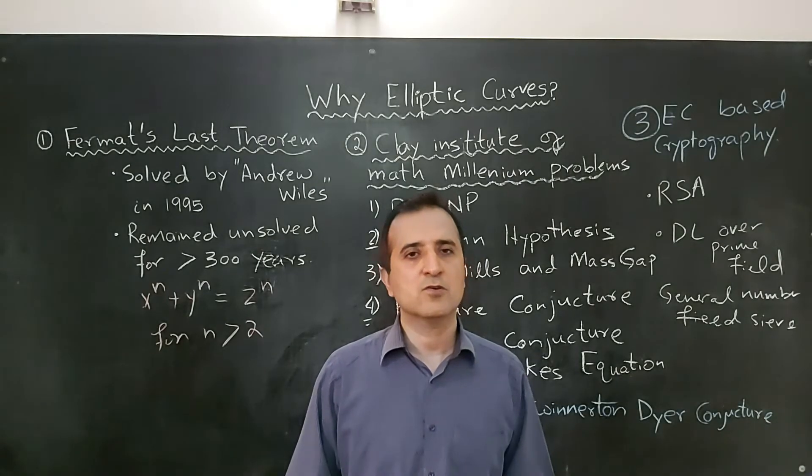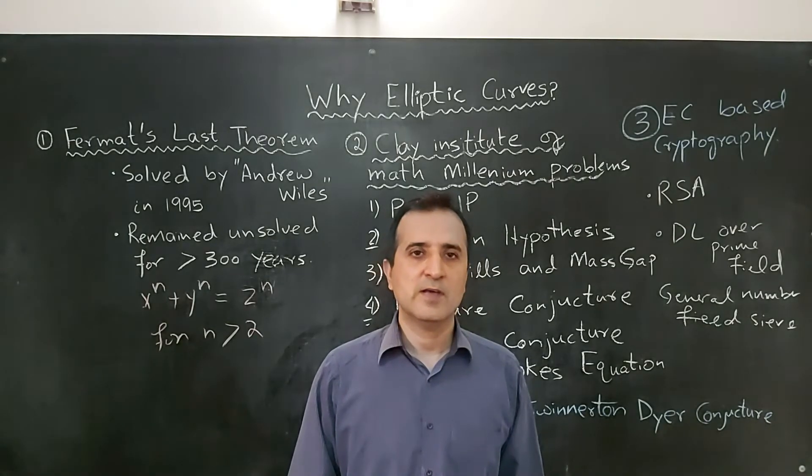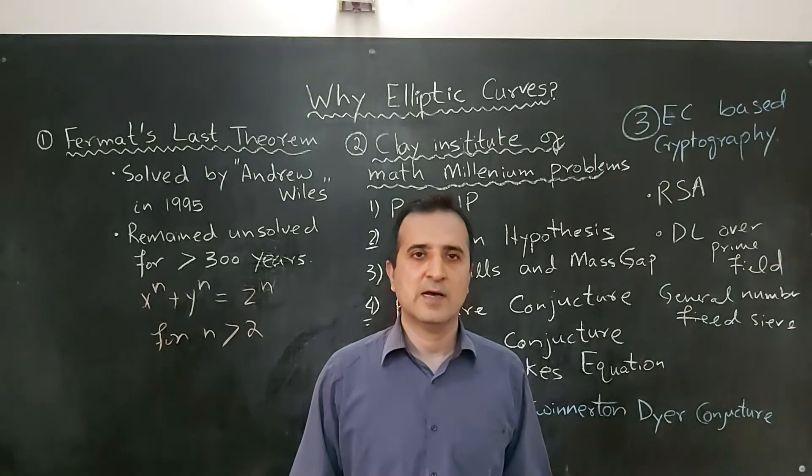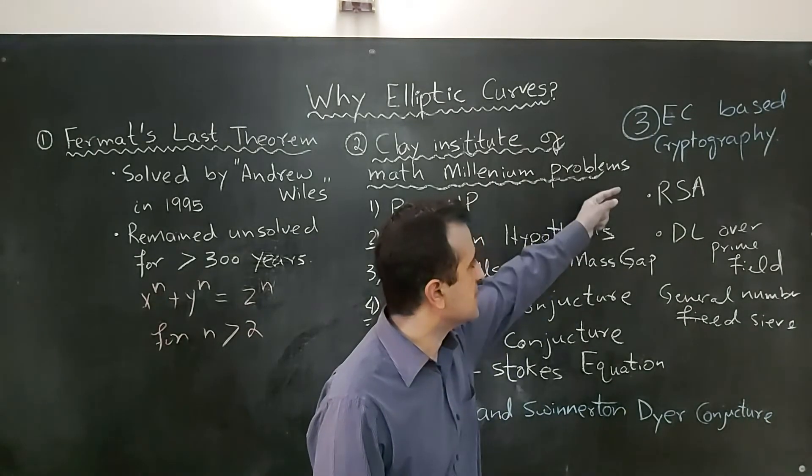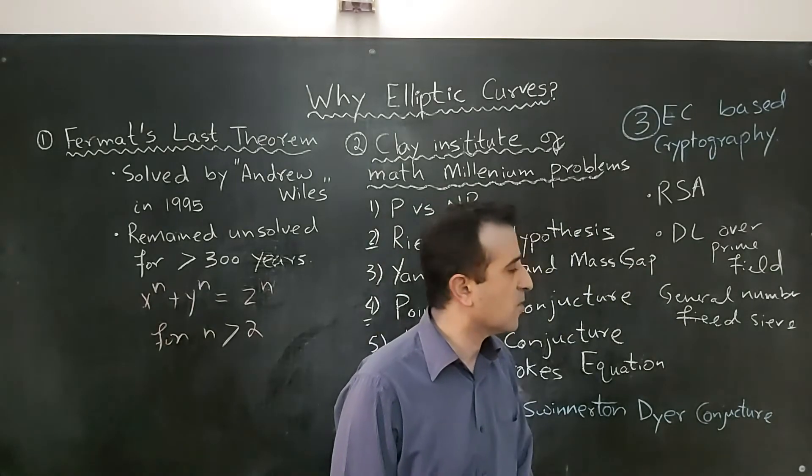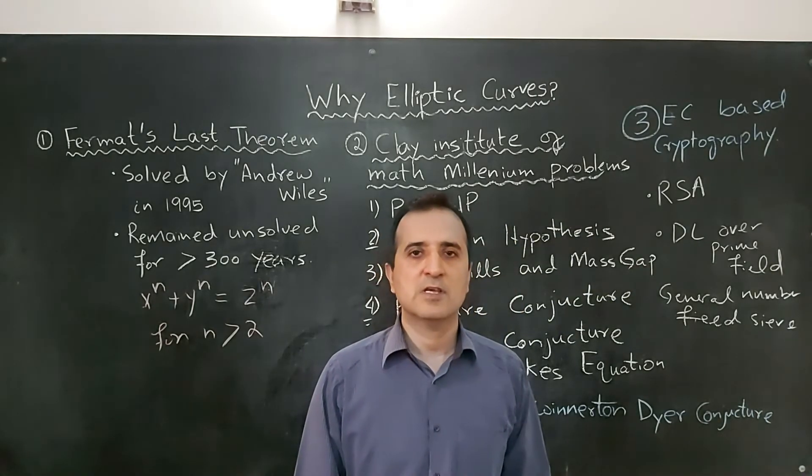Therefore, in resource-constrained devices where enough energy is not available, we cannot use RSA and discrete logarithmic problem over prime fields, but we can use elliptic curves.